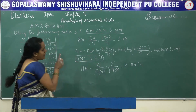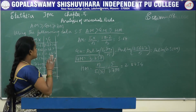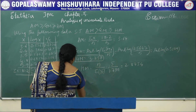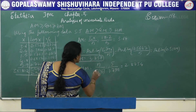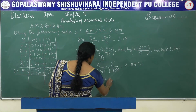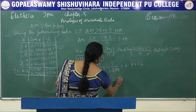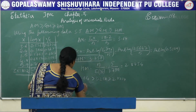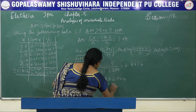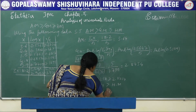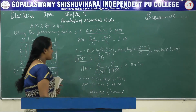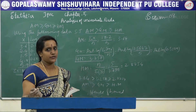Now observe the values: AM is 3.64, which is greater than GM = 3.258, which is greater than HM = 2.8754. Therefore, AM is greater than GM, which is greater than HM. Hence proved.